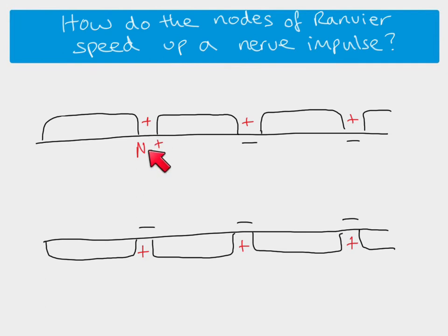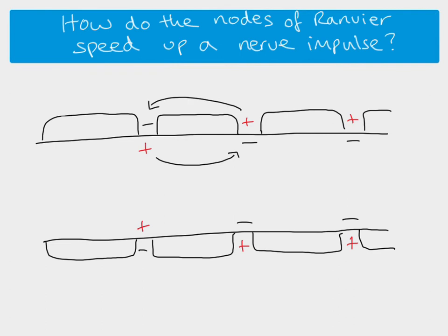The only place you can actually have an action potential is at these nodes. If sodium ions enter at one node, you get an action potential — as shown by the change in voltage across the membrane. Just as before, you get a local circuit, which means sodium moves down the axon to the next node, where the membrane becomes depolarized and you get an action potential there.